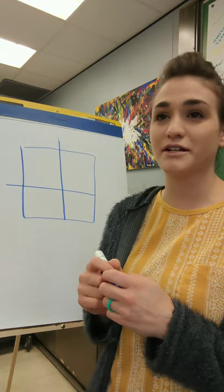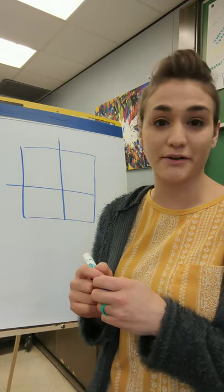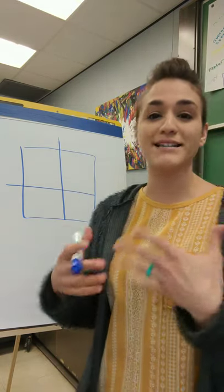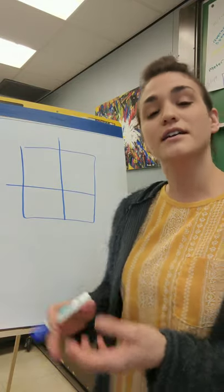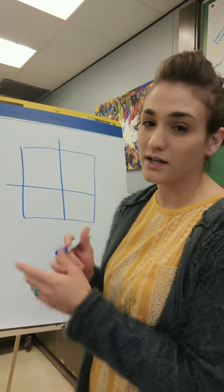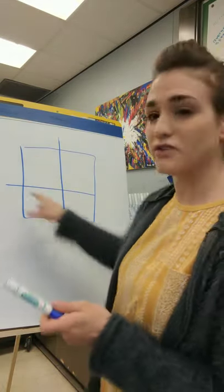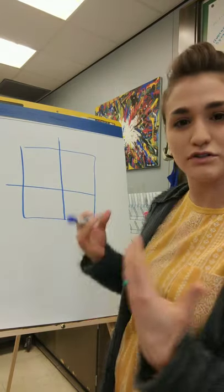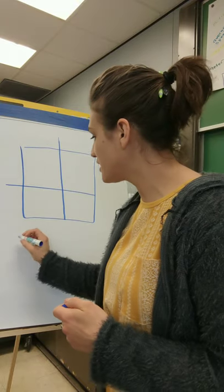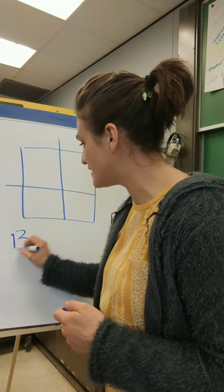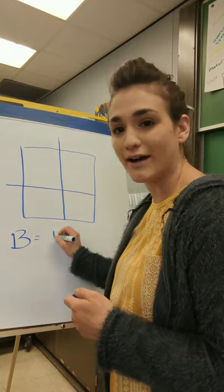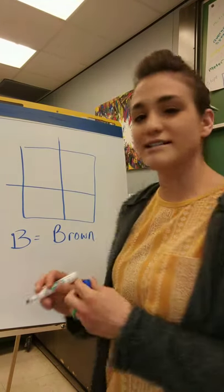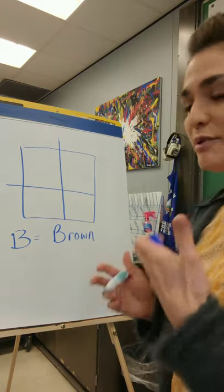Let's pick a trait like brown eyes. If you want to know the odds of passing on that trait to your offspring, you can use something called a Punnett square. I draw a little square with a couple of cells in it to make four quadrants or four cells. We're going to let the capital letter B equal brown eyes — brown eyes have a lot of brown pigment in them.